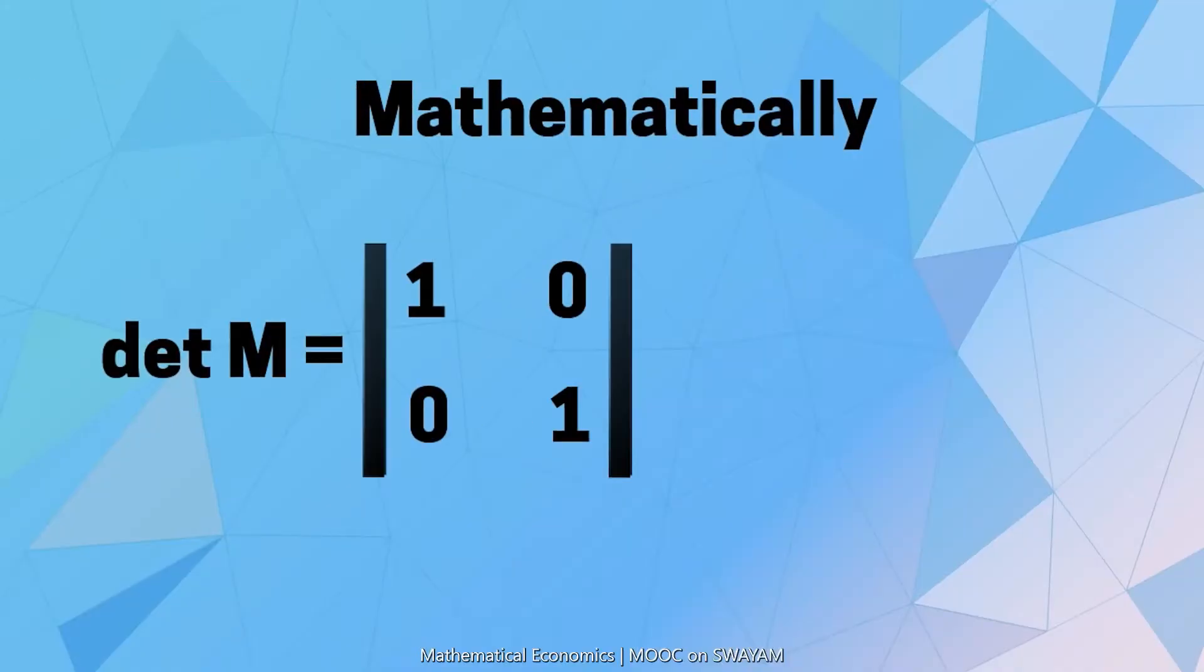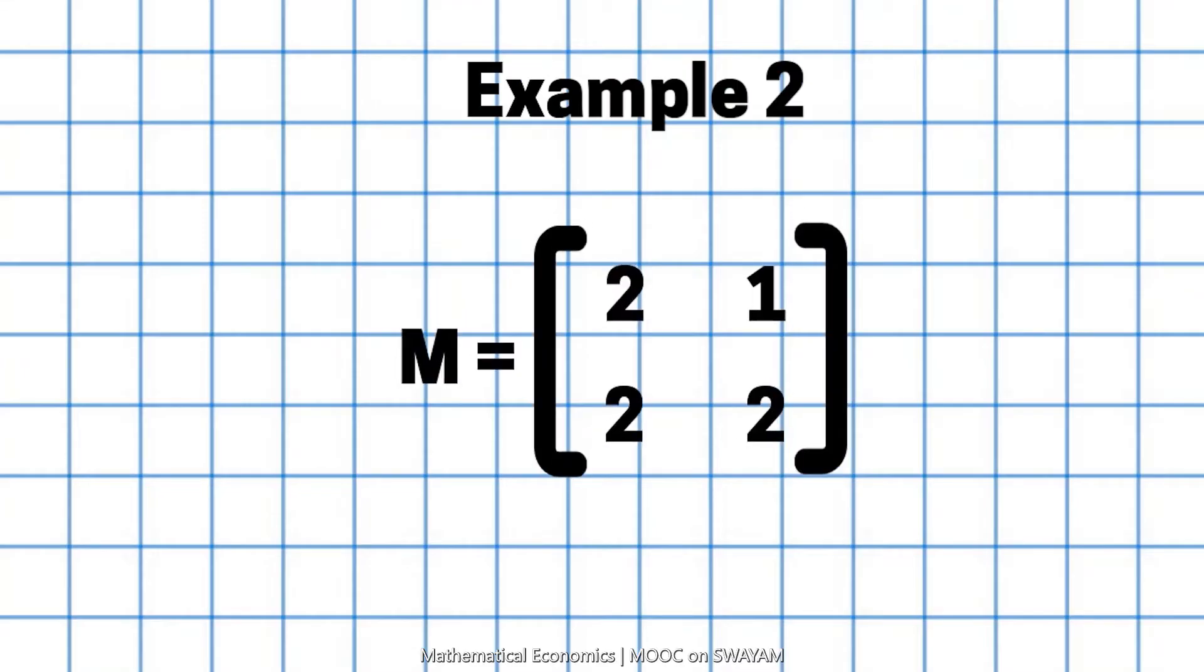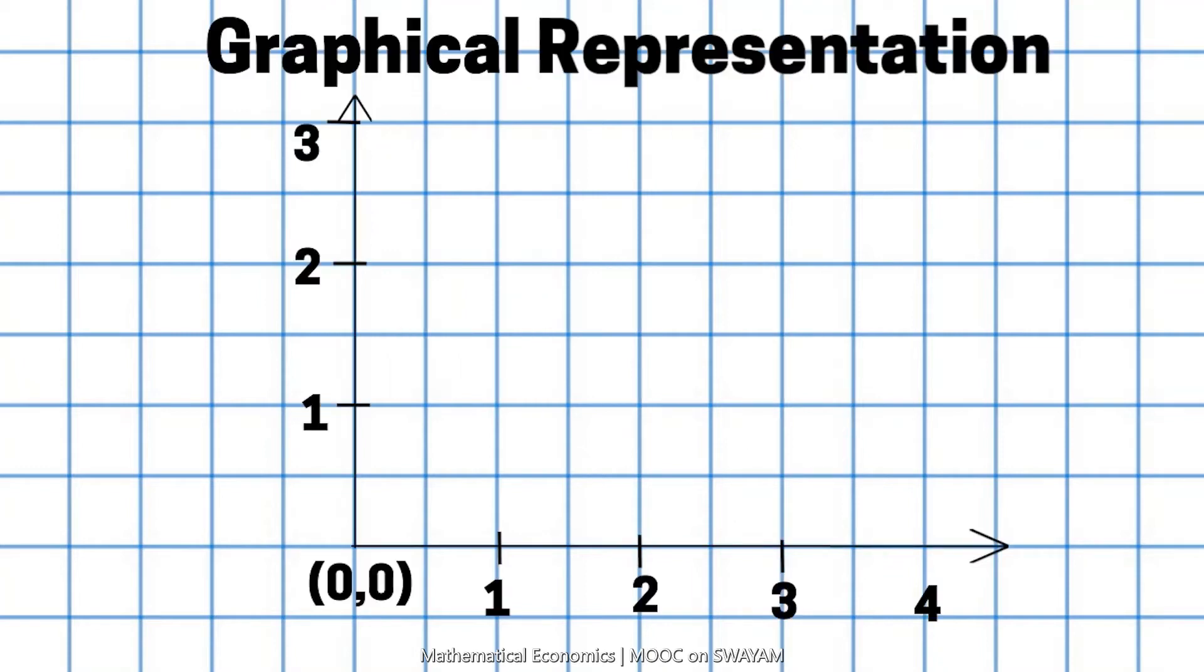Mathematically, determinant may be found by the method of cross multiplication. Take another example. What is the determinant of this matrix? Let us first draw the vectors in the two-dimensional space.